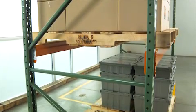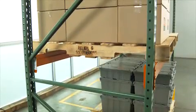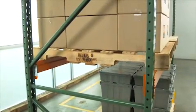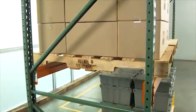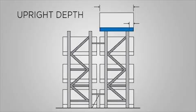Next, examine the necessary upright depth. A typical application requires the depth of an upright to be 6 inches less than the depth of the pallet. For example, a standard GMA pallet is 48 inches deep. The pallet should overhang the pallet rack beams 3 inches in the front of the system and 3 inches in the back of the system.